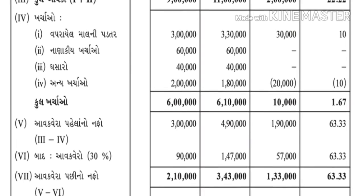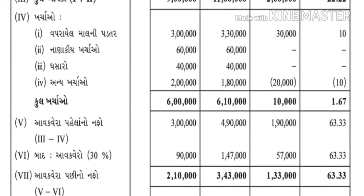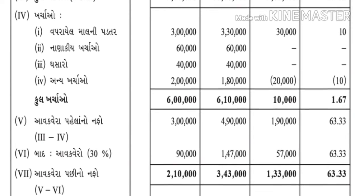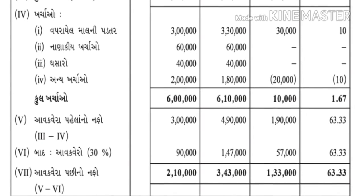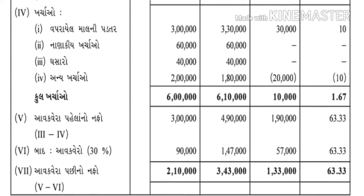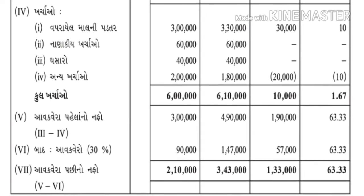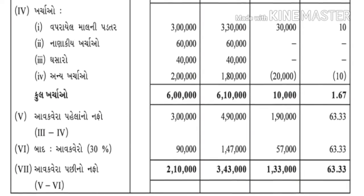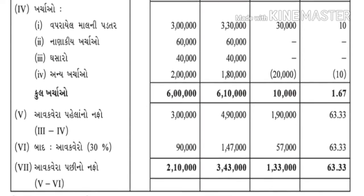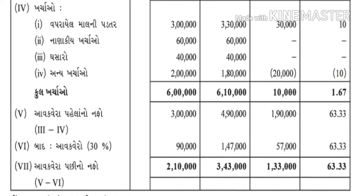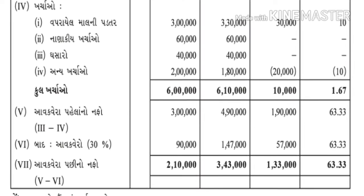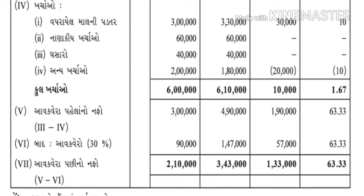ત્યારબાદ આવકવેરો - જે લખ્યો છે - આવકવેરાનો પણ આપણે વધારો/ઘટાડો ટકાવારી - 2016ની આવકવેરો 90 હજાર, 2017માં આવકવેરો વધીને 1 લાખ 14 હજાર. ખરેખર વધારો કેટલો? આવકવેરાની અંદર 57 હજાર - 63% - ત્યાં ટકાવારીમાં મૂકી દઈશ.